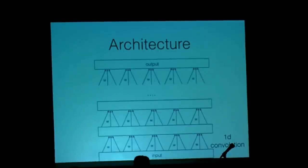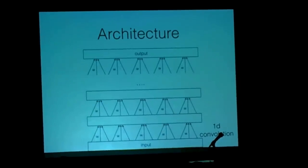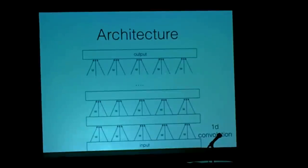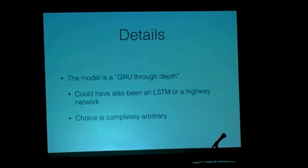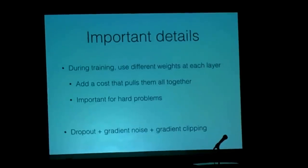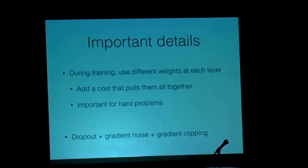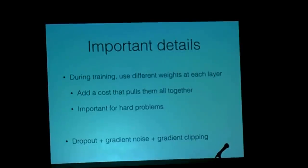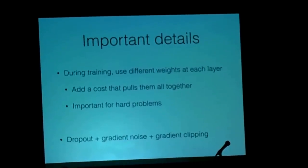But then the optimization became easier. And then over time we would add a cost function that gradually pushed all those weight matrices together. And that made learning work. Without this we would not be able to solve this problem. We also found that using dropout and adding noise to the gradient and gradient clipping were all very important to get the good results. And unfortunately, as it is often the case with these models, very careful hyperparameter optimization was necessary.